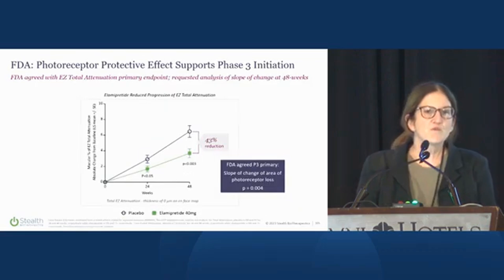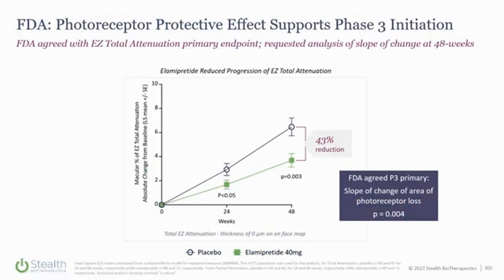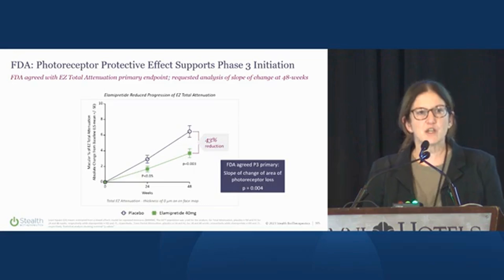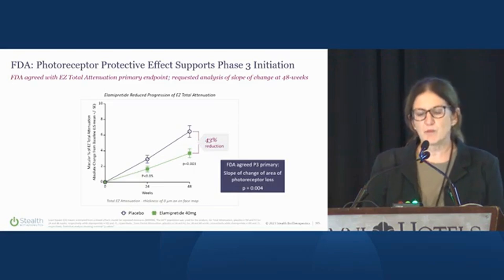We saw a 43% protective effect on photoreceptors, looking at the area where photoreceptors are zero microns — meaning total death of the photoreceptors. The FDA agrees that this is an approvable Phase 3 endpoint, really wanting to see a separation in the slope of change over the treatment period.